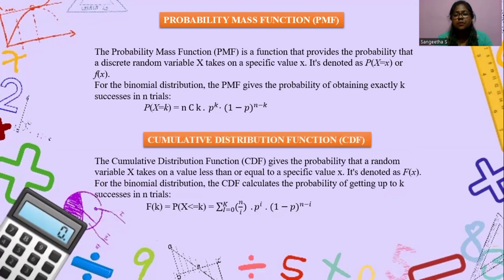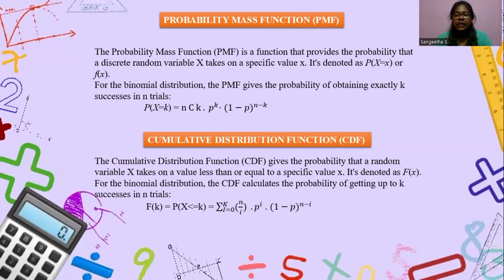Next is the cumulative distribution function (CDF). The CDF gives the probability that a random variable X takes on a value less than or equal to a specific value x, denoted as F(x). For the binomial distribution, the CDF calculates the probability of getting up to K successes in N trials: F(K) = P(X ≤ K) = Σ(i=0 to K) N_C_i × P^i × (1−P)^(N−i). Here F(K) is the cumulative distribution function, N_C_i is the combination, P is the probability of success, and (1−P) is the probability of failure in each trial.